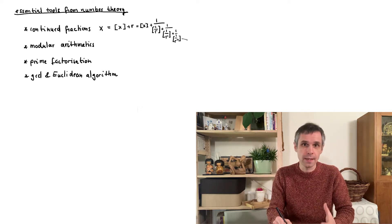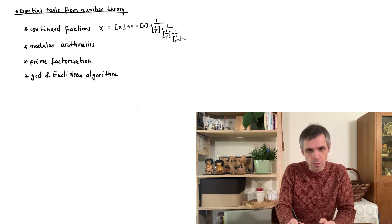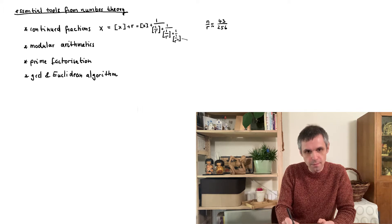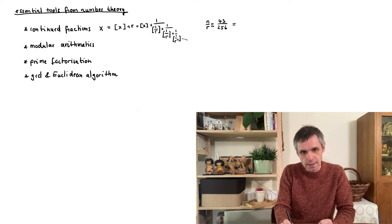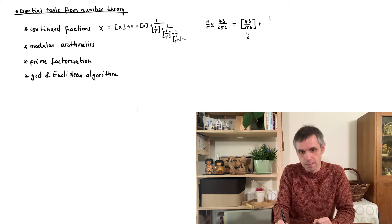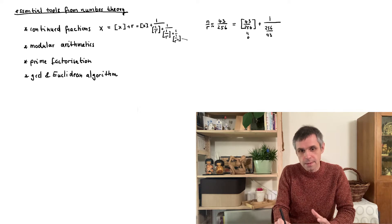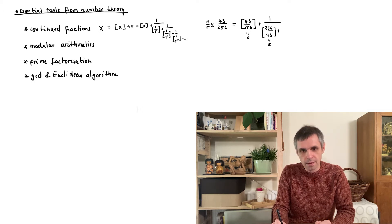For illustration, consider the case where we carried out the period-finding algorithm with eight quantum bits, and our measurement tells us that n/r must be close to 43/256. We can use continued fractions to find other rational numbers close to this. First, we take the integer part — in this case just zero — then take the remainder and put it into the denominator. Next, the integer part of that is five, and the remainder is 41/43, again put into the denominator.